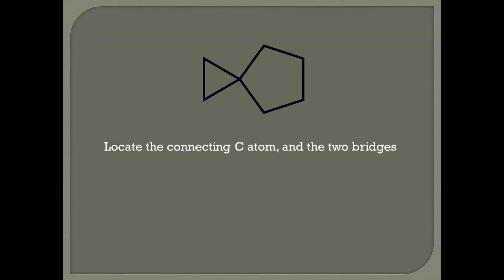Rule number one: locate the connecting C atom and the two bridges. As you can see here, there is the connecting point, the connecting carbon atom. It's a quaternary carbon that is connected to four carbons.